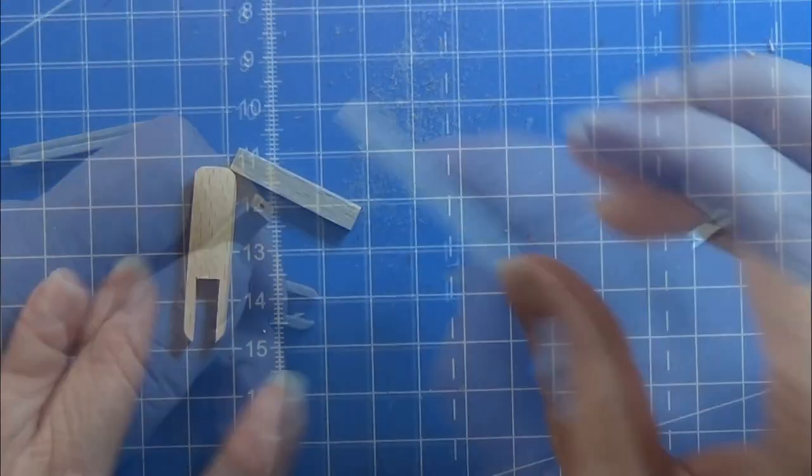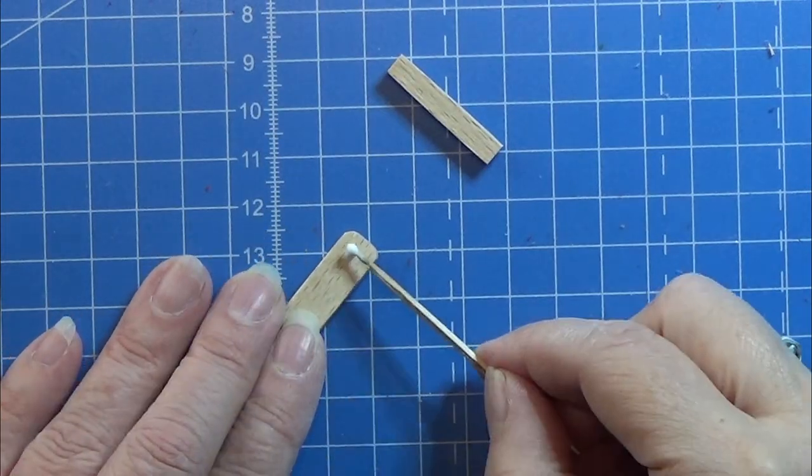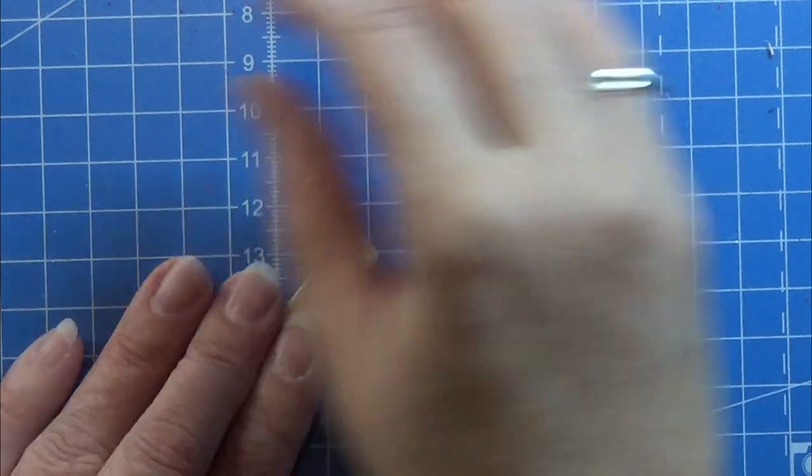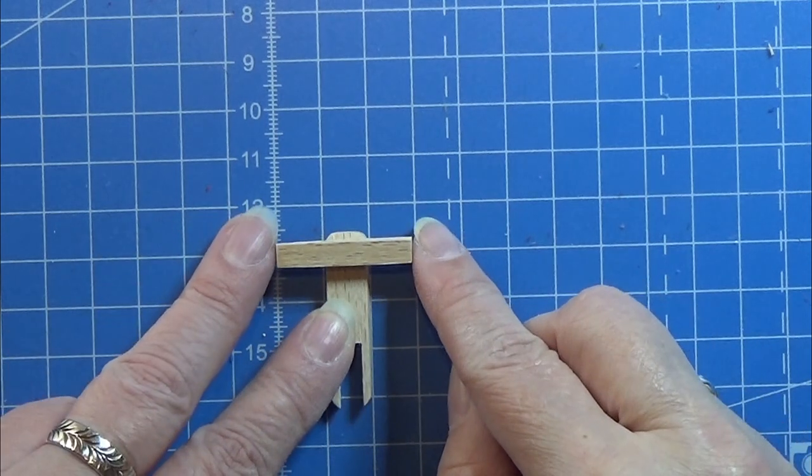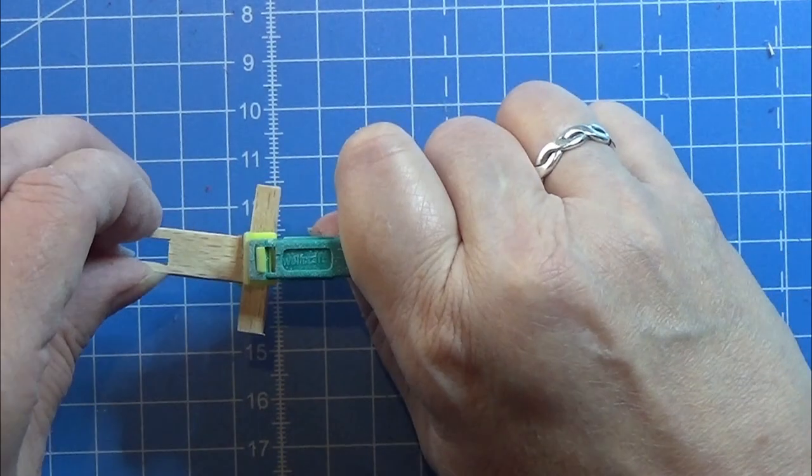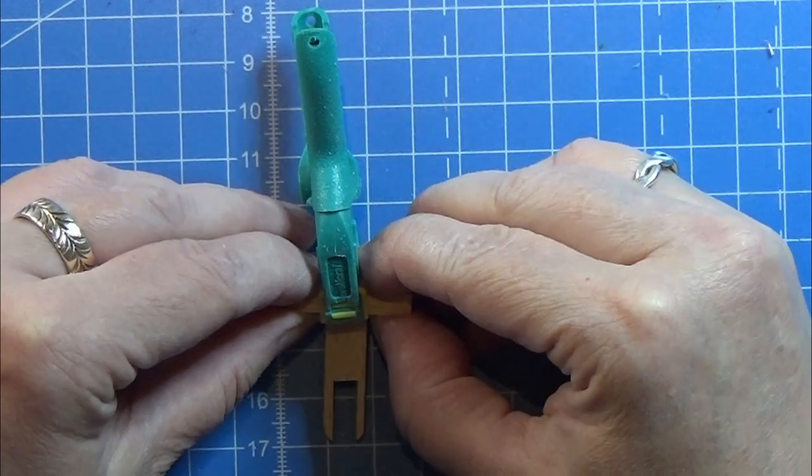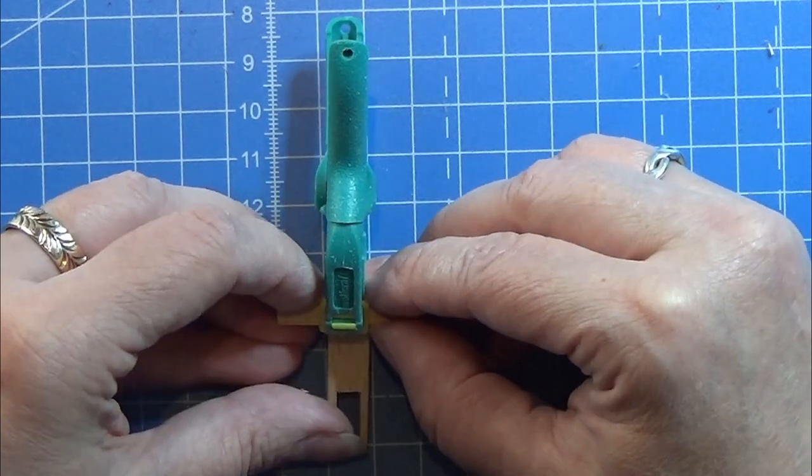Then I am gluing the two parts together just like you see me do right here, and I like to clamp it so I'm sure that it will sit in the right place when it is all drying up. Let it dry from here before you continue.